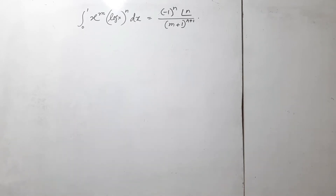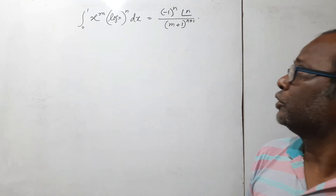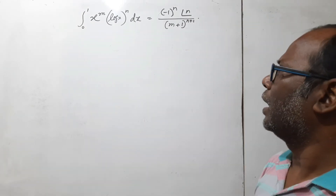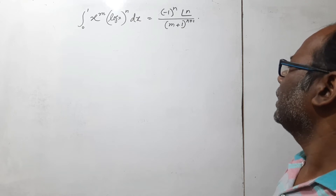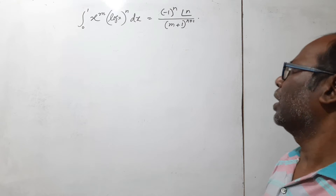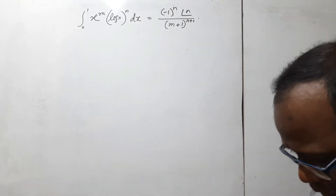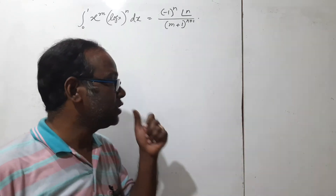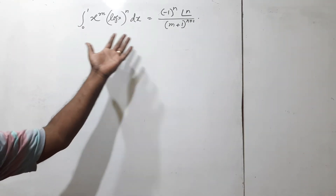Welcome to my channel, dear students. Here is an integral from 0 to 1 of x to the power m and log x to the power n dx, and the result is (-1)^n times factorial n over (m+1)^(n+1). This is most important for the digamma function. I am proving this form — the result of this integral is this.